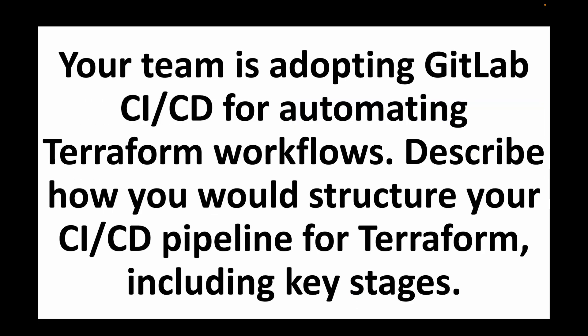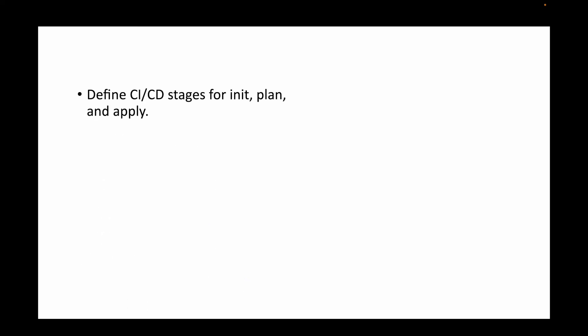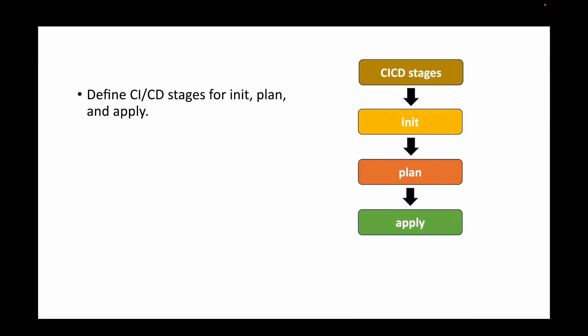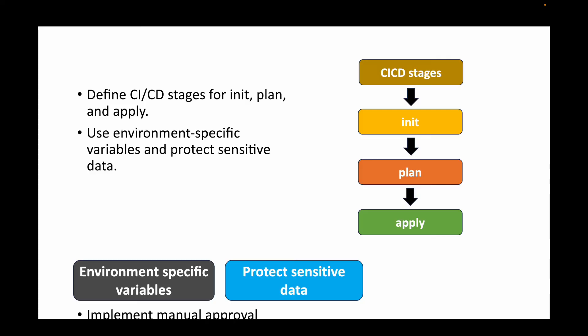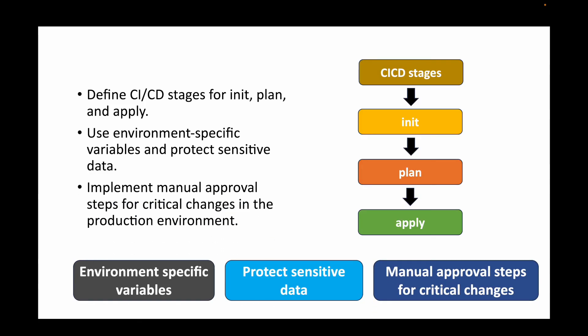The final question is: your team is adopting GitLab CI/CD for automating Terraform workflows — how would you structure your CI/CD pipeline? The key stages are init, plan, and apply. Init initializes the Terraform configuration files, plan generates a preview of the actions Terraform will take, and apply executes those actions. Additionally, it's recommended to use environment-specific variables, protect sensitive data, and implement manual approval steps for critical changes — avoid auto-approvals for terraform apply.